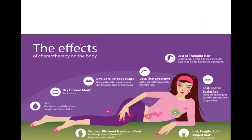These are the effects of chemotherapy on the body: lost or sparse eyelashes; lost, fragile, split nails; lost or thinning of hair; lost or thinning of eyebrows; dry, sore, chapped lips; dry, ulcerated mouth; dry skin; and swollen, blistered hands and feet.